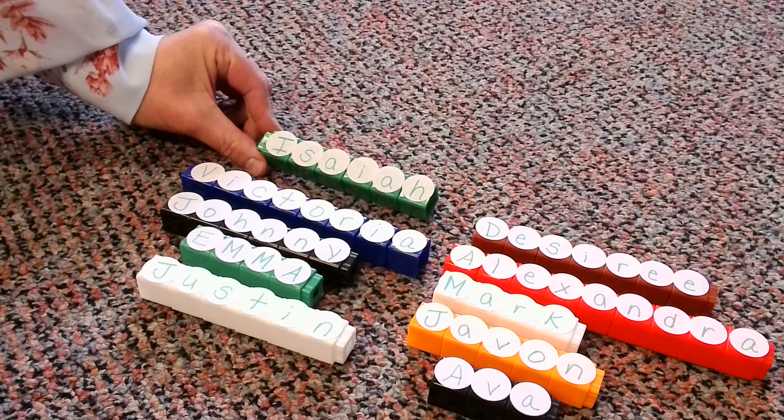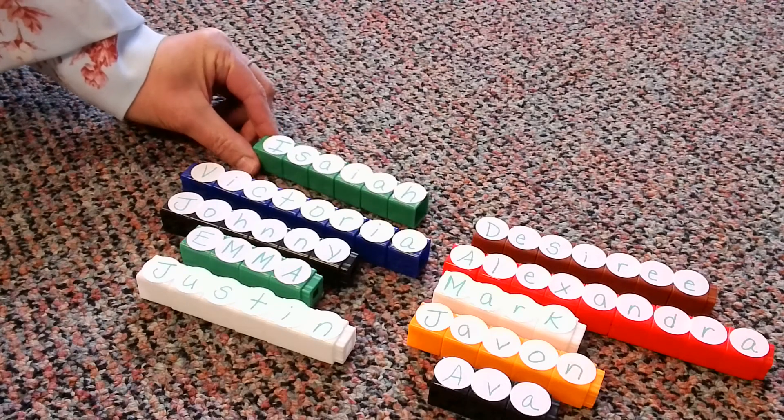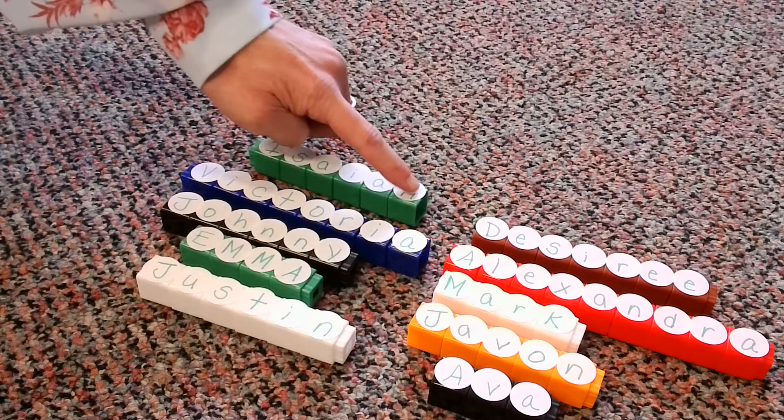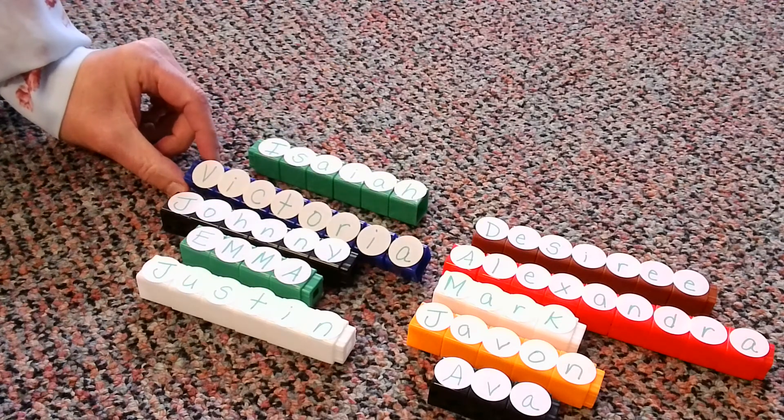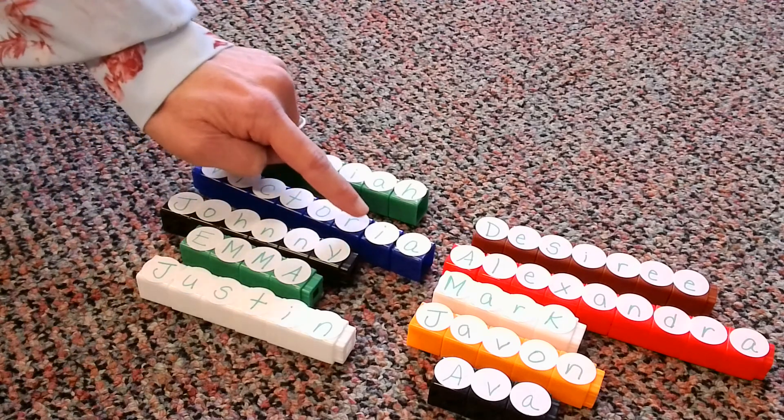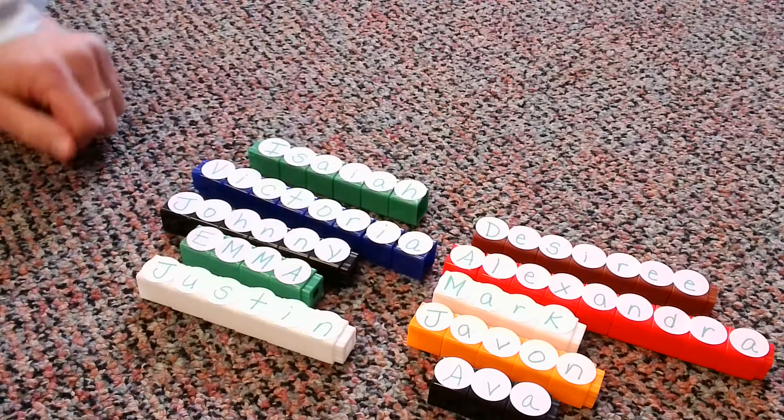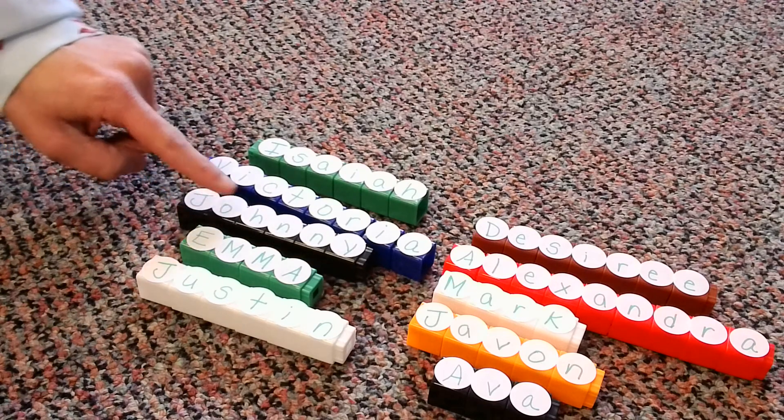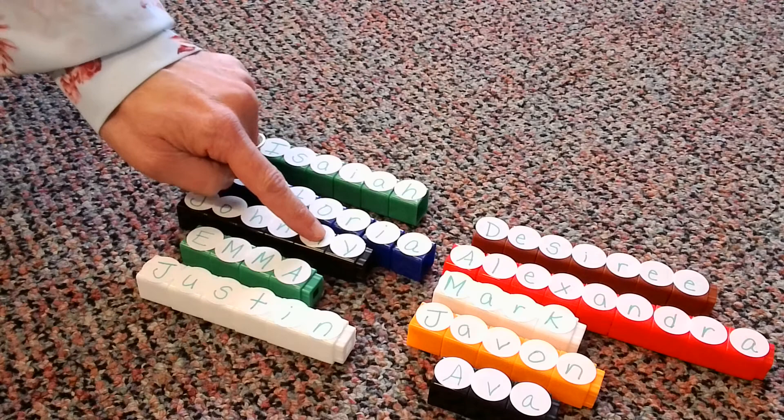Let's start with the first one. Isaiah. Let's count his letters. One, two, three, four, five, six. Victoria. One, two, three, four, five, six, seven, eight. Johnny. One, two, three, four, five, six.